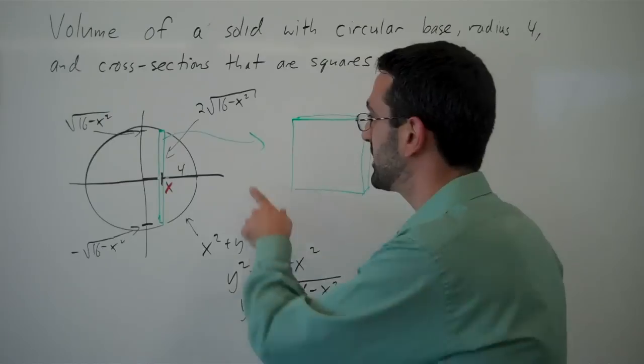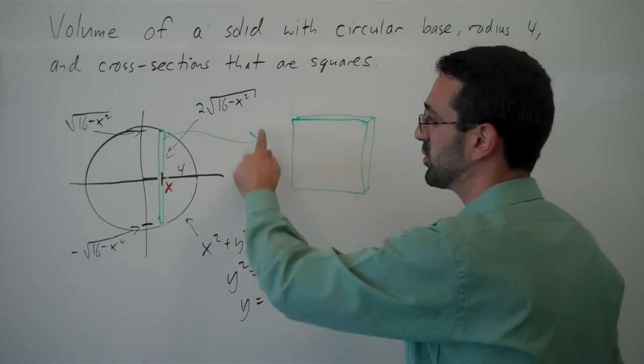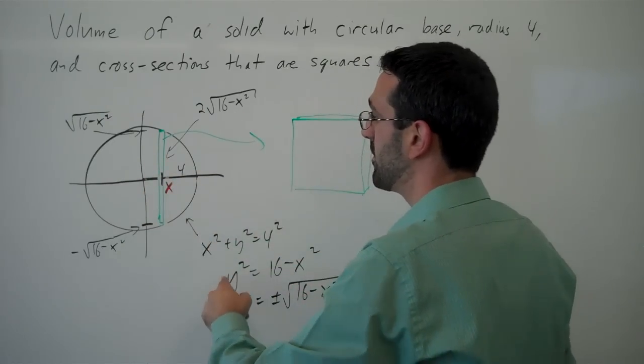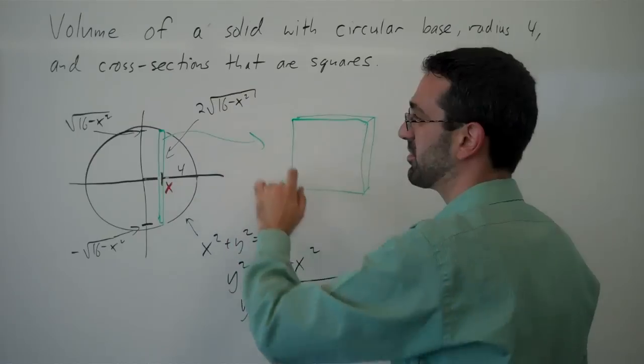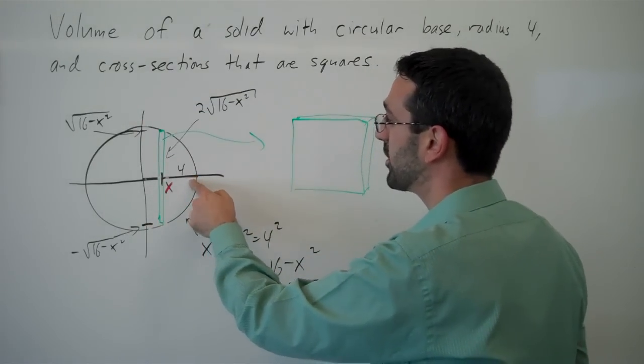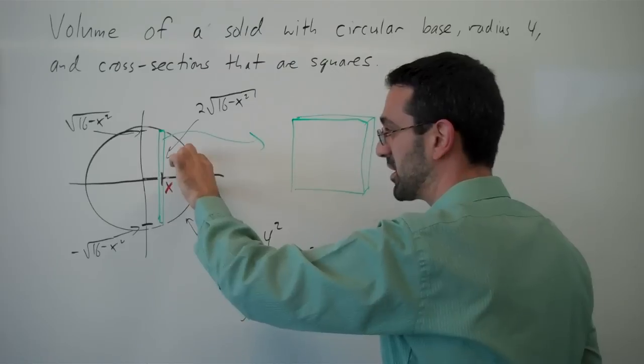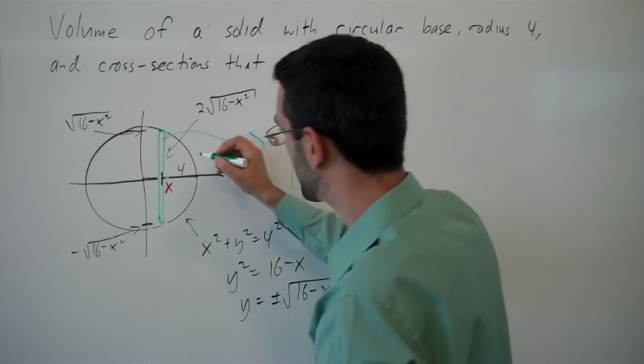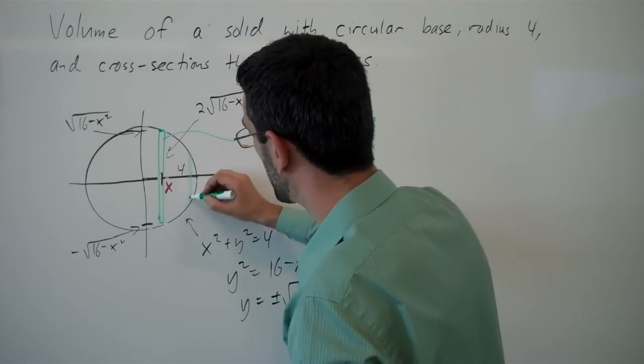Notice that this works the way we would expect. When x is 0, then this value is going to be very large. We're going to have a total height of 8. When x gets close to 4, then this value is going to get much smaller because the slices over here are going to be much shorter.